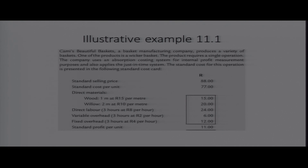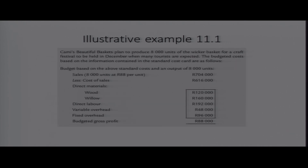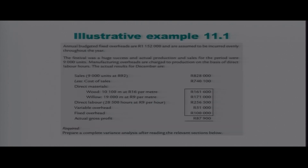We are going to look at illustrative example 11.1, focusing only on the overheads. From the budgeted information: variable overheads are budgeted at 3 hours at a rate of R2 per hour, giving R6 per unit. For fixed overheads, we budgeted 3 hours at R4 per hour, giving R12 per unit. The budgeted income statement shows R48,000 for variable overheads and R96,000 for fixed overheads. Actual information: we incurred R51,000 for variable manufacturing overheads and R100,000 for fixed overheads.